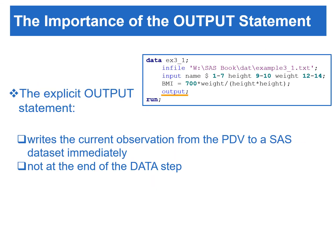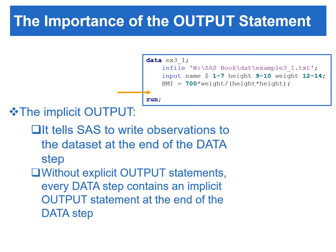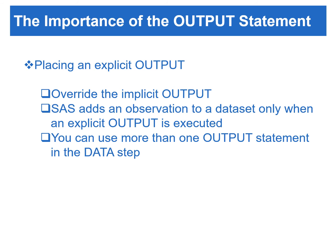In the previous program, an explicit OUTPUT statement tells SAS to write the current observation from the PDV to a SAS data set immediately at the point where you place it, but not at the end of the data step. If we remove the explicit OUTPUT statement, every data step contains an implicit output at the end of the data step. If you place an explicit OUTPUT statement in a data step, it overrides the implicit output — once an explicit OUTPUT statement is used, there is no longer an implicit output at the end of the data step. SAS adds an observation to the output data set only when an explicit OUTPUT statement is executed. Furthermore, more than one OUTPUT statement in the data step can be used.